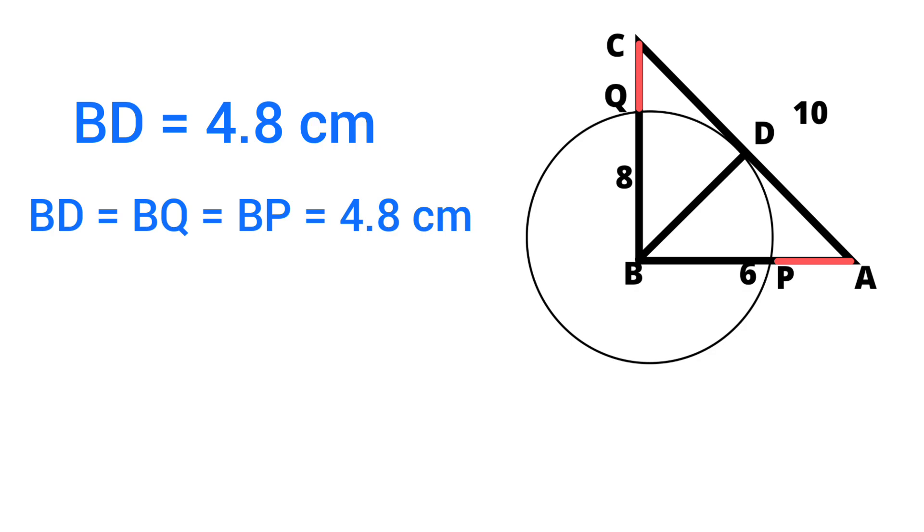Now we have the radius value of this circle. Let's find out the lengths of AP and QC. AP equals AB minus BP.